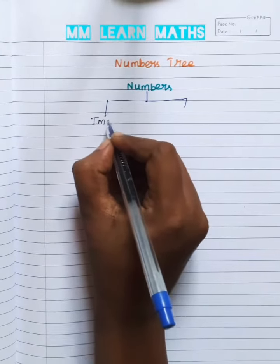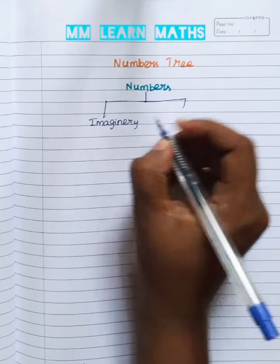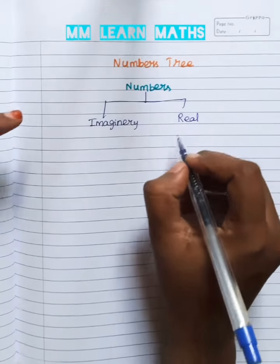Imaginary numbers. Real numbers. Real numbers is the two type.